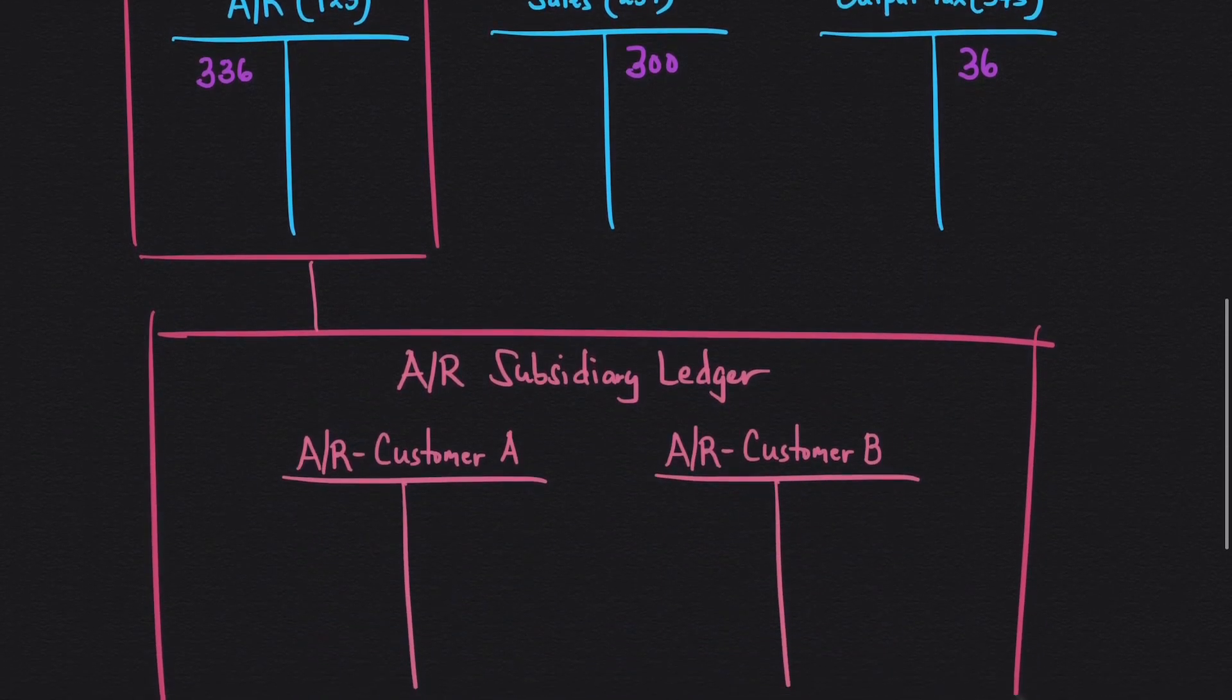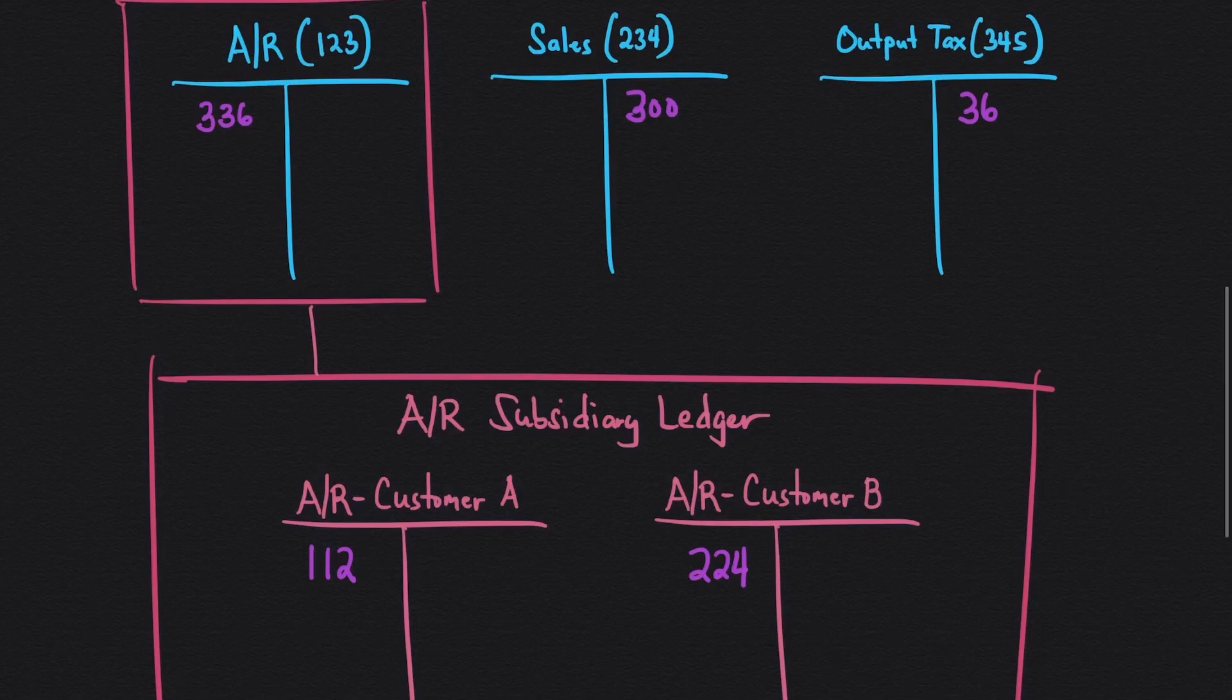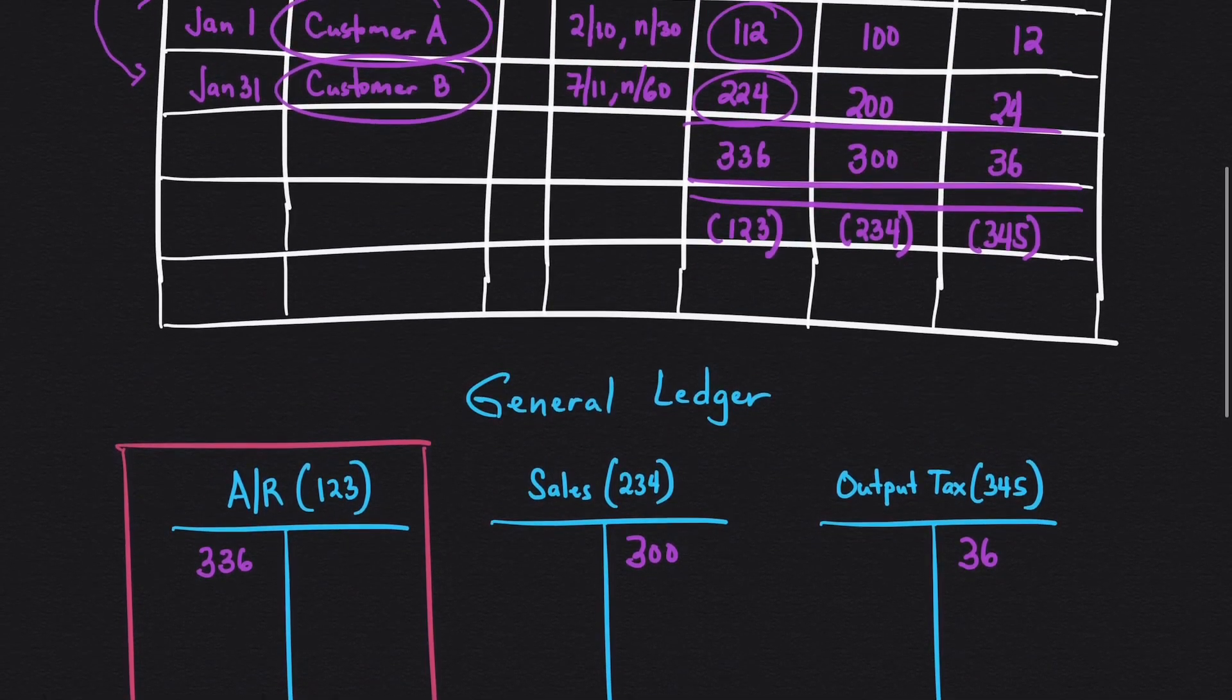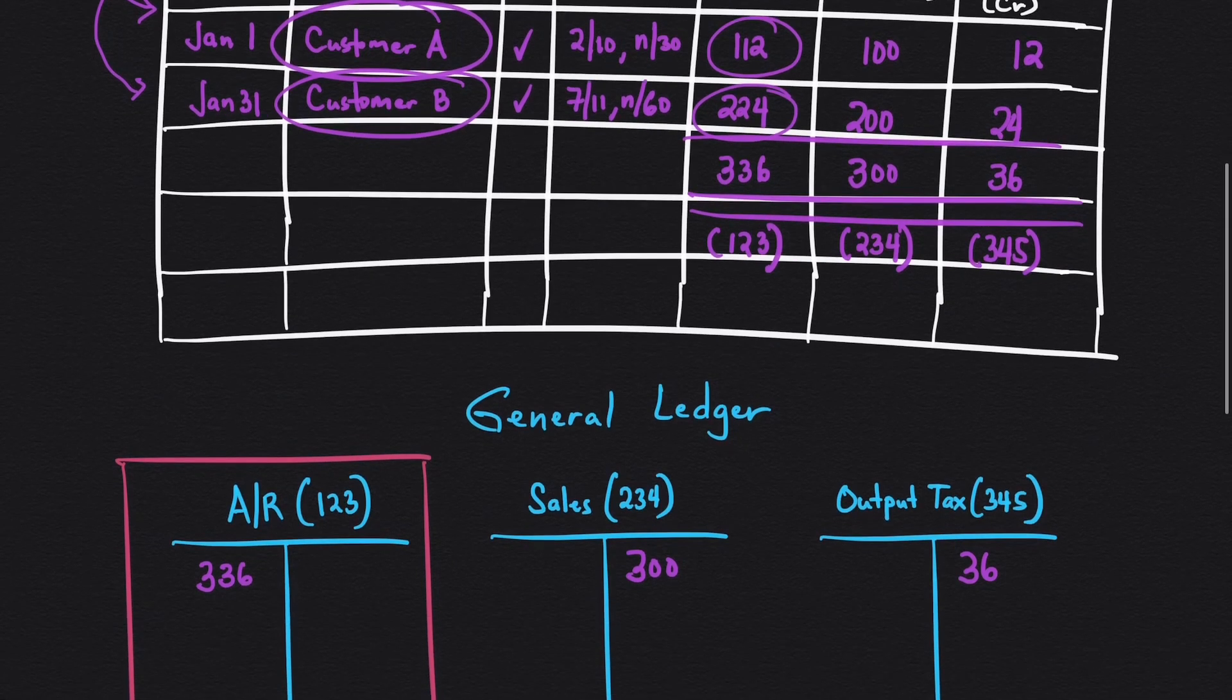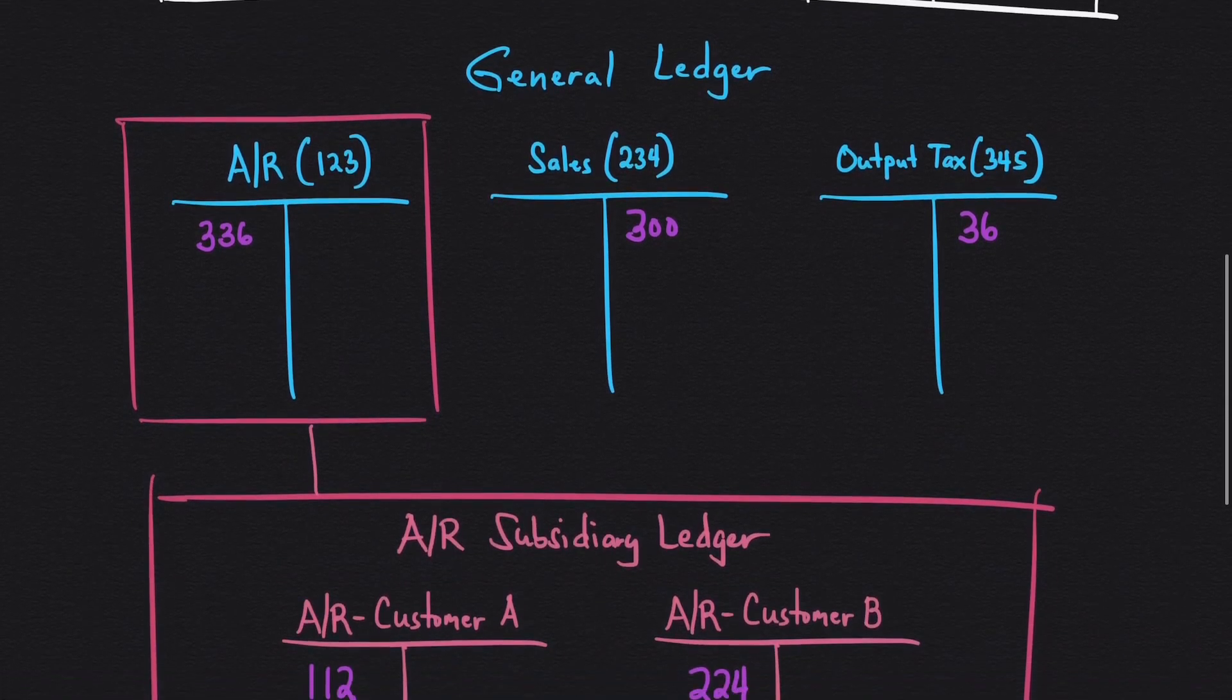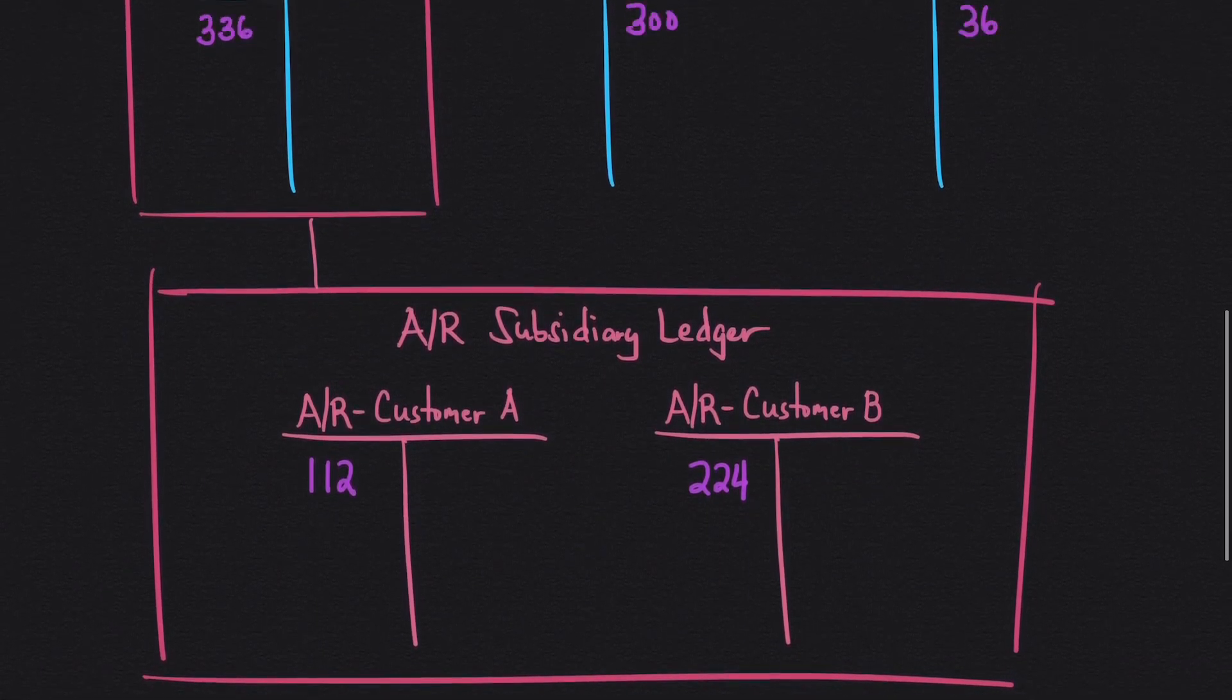Let's post. Customer A, it's 112. And for customer B, it's 224, which will give you the total amount of 336 in the general ledger or the control account for accounts receivable. After posting, you would just tick the box to indicate that the amounts were placed. After that, you are done with posting. You already posted in the general ledger and at the same time in your subsidiary ledger.